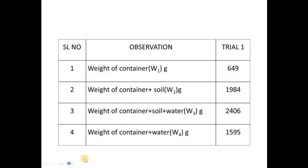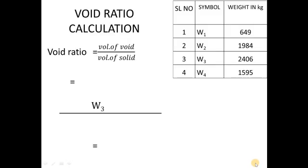Now, we have all the required weights. Weight of container W1, container plus soil W2, container plus soil and water W3, container plus water W4. Let us substitute these values in the required equation to get the value of void ratio and porosity.